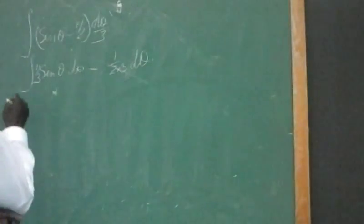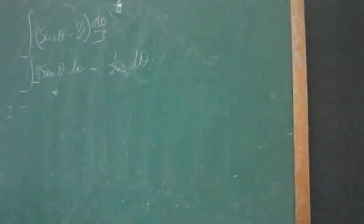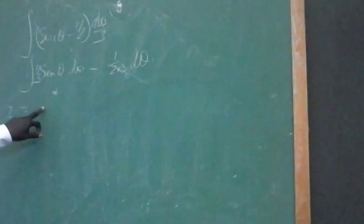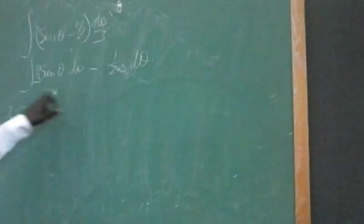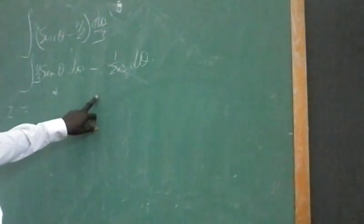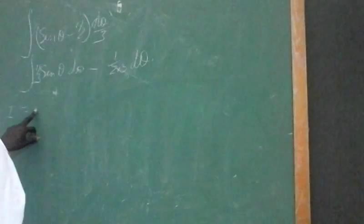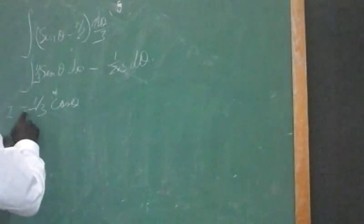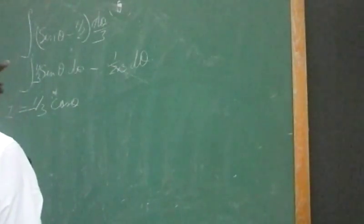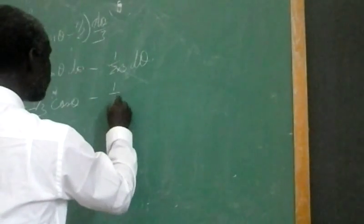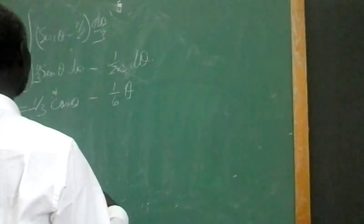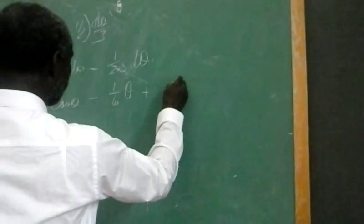And we do integration now. The integral of sine theta. You say d/d theta of cos theta is equal to minus sine theta. If we integrate minus sine theta, we get cos theta. So this will be negative cos theta, minus sine theta. Minus one-sixth theta.